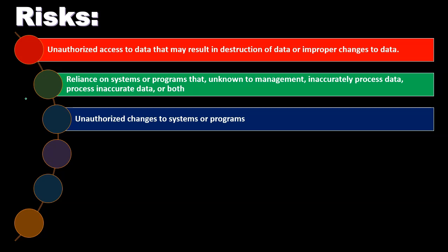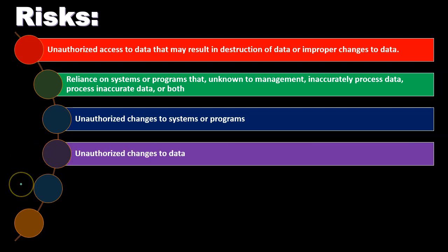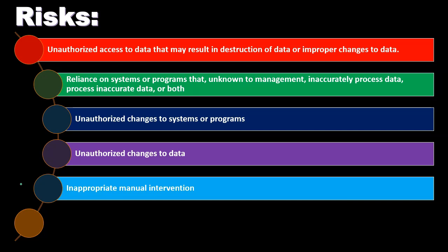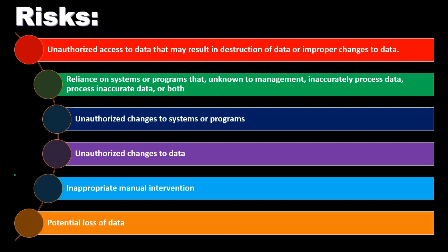There are also risks of unauthorized changes to systems or programs. We must ensure controls are in place over who is operating the system. A key problem is that the person designing the internal control system — who knows what the separation of duties should be — is separate from the IT department that knows how to actually implement it. There has to be really good communication between those individuals. Unauthorized changes to data and inappropriate manual interventions within the system are similar concerns, and all of these come down to how well the database program is set up.